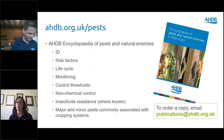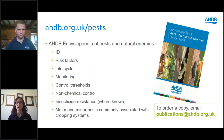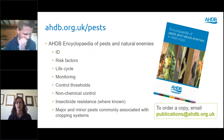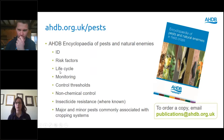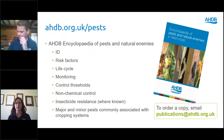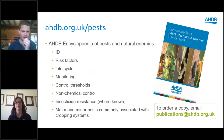The main publication we have is the 'Encyclopedia of Pests and Natural Enemies' — a really important publication covering a range of crops, pests, and natural enemies, including identification, risk factors, life cycle, monitoring, control thresholds, non-chemical controls, and where known, insecticide resistance. A key part is the natural enemies section, which includes ID information and how you can adapt your management systems to promote natural enemy numbers on your farm.